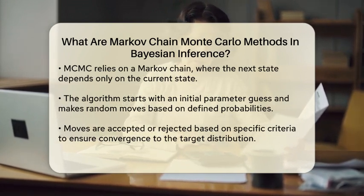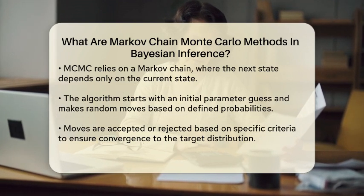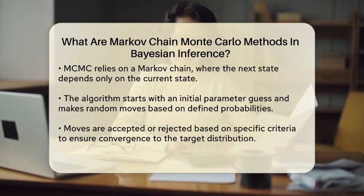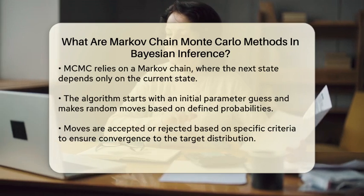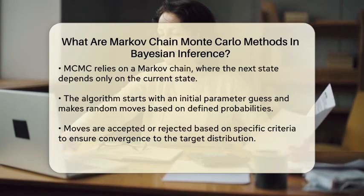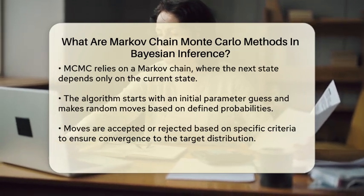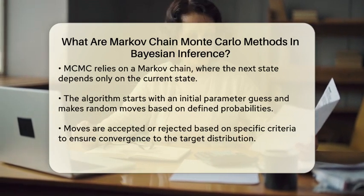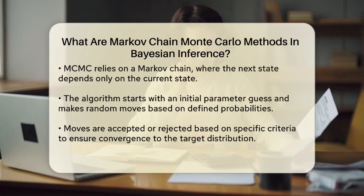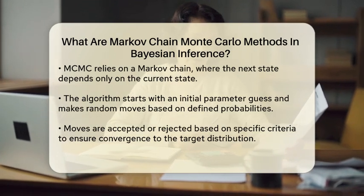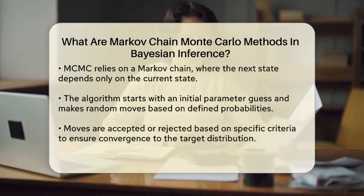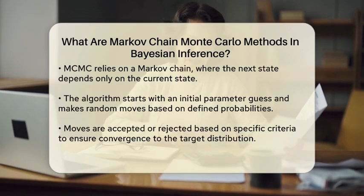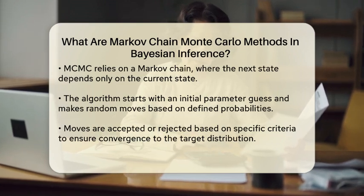The process begins with a Markov chain, which is a sequence of random variables where the next state depends only on the current state. This property allows MCMC to efficiently explore the parameter space. The algorithm starts with an initial guess for the parameters and then makes a series of random moves based on a defined probability. Each move is accepted or rejected according to a specific criterion, ensuring that the chain eventually converges to the target distribution.